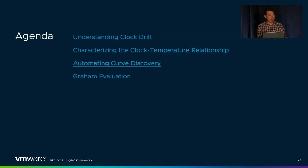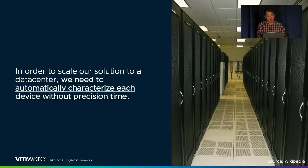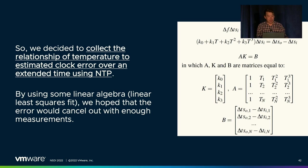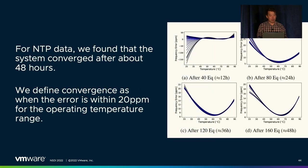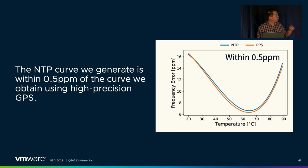Armed with a way to discover the curves, we needed a way to automate the process. In a real data center setting, we can't expect precision time to be available at every machine. So we decided on a method that works over NTP, hoping that with enough measurements the error would essentially cancel itself out — NTP provides at best milliseconds of accuracy. We applied linear algebra and least-squares fitting: we aggregate temperatures observed between synchronizations to generate a set of linear equations and solve for the temperature constants. Using NTP over a WAN connection, the system converged to within 20 ppm of error after 48 hours, and the NTP-derived curve was within 0.5 ppm of the curve generated using high-precision GPS signals.